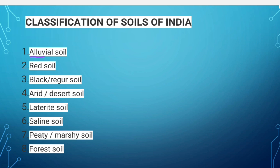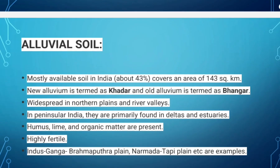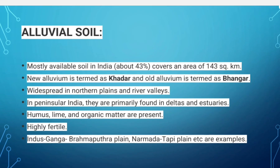The eight types are: alluvial soil, red soil, black soil, desert soil, laterite soil, saline soil, peat and marshy soil, and forest soil. First we'll see about the alluvial soil.